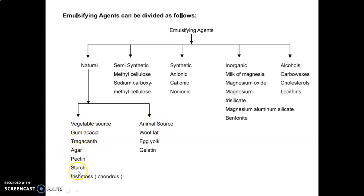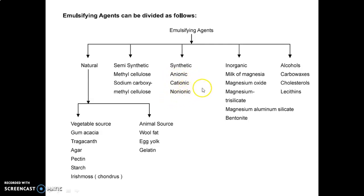Also Irish moss (chondrus). Animal sources include wool fat, egg yolk, and gelatin. Semi-synthetic agents include methyl cellulose and sodium carboxymethyl cellulose (sodium CMC). Synthetic agents include anionic, cationic, and non-ionic types — anionic contains negative charge, cationic positive charge, and non-ionic is charge-less. Inorganic agents include milk of magnesia, magnesium oxide, magnesium trisilicate, magnesium aluminum silicate, and bentonite. Alcohols include carbowaxes and cholesterol lecithins.